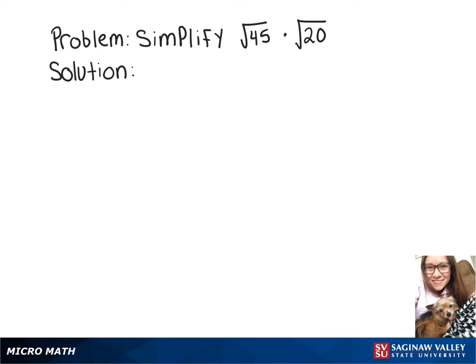We're going to simplify the square root of 45 times the square root of 20. There are two different ways to think about this problem.